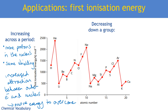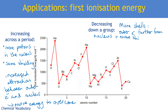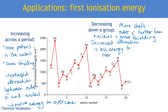First ionization energy also decreases as you go down a group. For example, looking at helium, neon, and argon, you can see a downward trend. The explanation is very similar to Group 2 reactivity. There is increasing nuclear charge, but more importantly there are more shells, which means the outer electron is further from the nucleus. There is also more shielding, and therefore decreased attraction between the nucleus and the outer electrons, meaning less energy is needed to overcome this attraction.